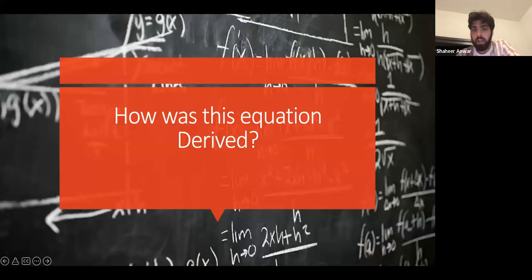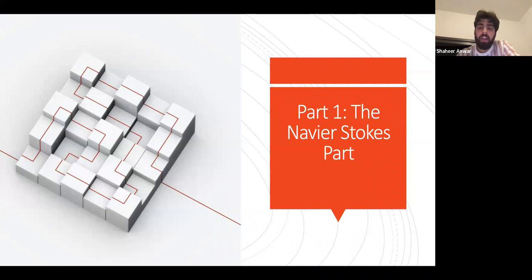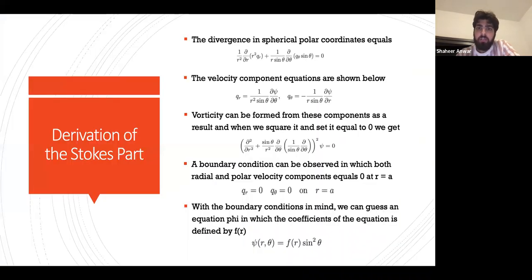How is this equation derived? Part one: the Navier-Stokes part. The divergence in spherical polar coordinates equals as shown over here, and the velocity component equations are shown below.